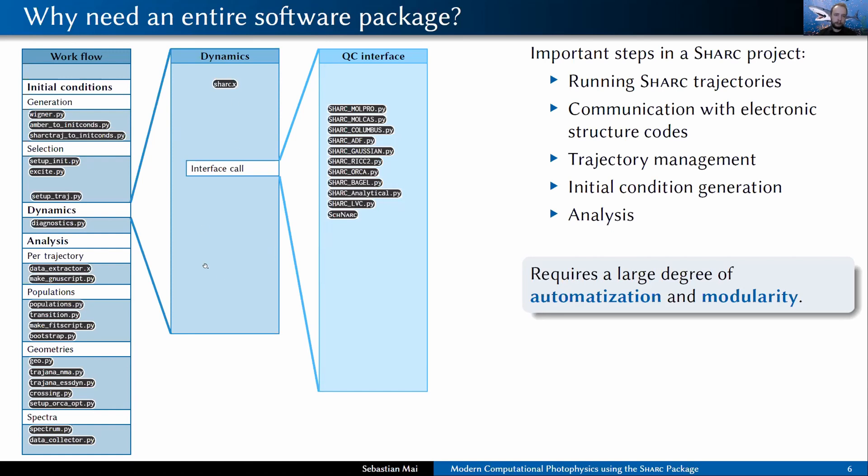The dynamics driver is a monolithic Fortran code. But then we have different Python scripts that are the quantum chemistry interfaces that communicate to Molpro or Columbus or Orca. All these different workflow steps here on the left side are also implemented through a couple of Python scripts that communicate through well-defined files. They could in the future also easily be replaced by other scripts in order to allow to extend this package quite easily.